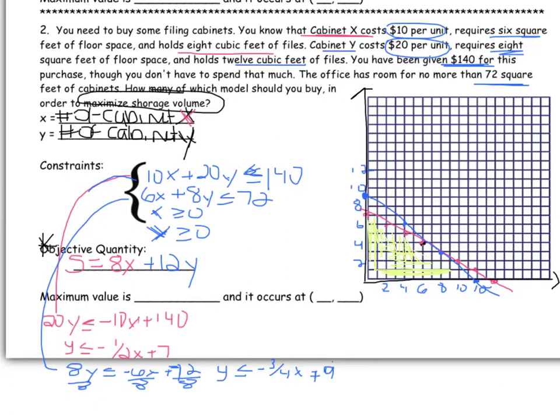So to find my vertices, or my extreme points, it would be here at 0, 7. It would be here, where they crossed or intersected, at 8, 3. And it would be here at 12, 0.